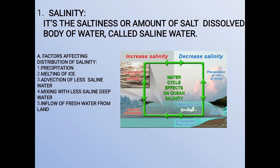Now we will see the meaning of salinity. Ocean water is always saline or salty due to the presence of various salts. The salinity of ocean water is expressed as the number of units of all salts contained in 1000 units of water. The average salinity of the oceans is 35 grams per 1000 grams of ocean water, and is written as 35 percent.